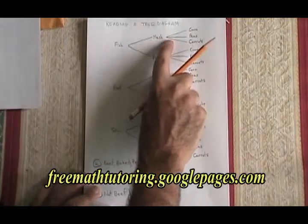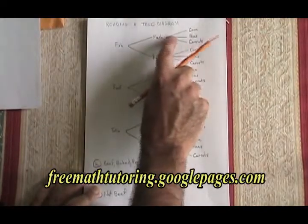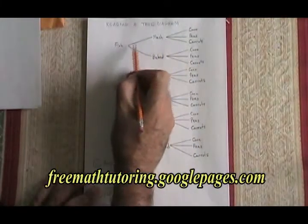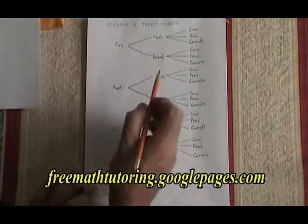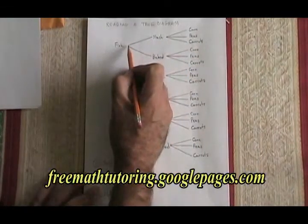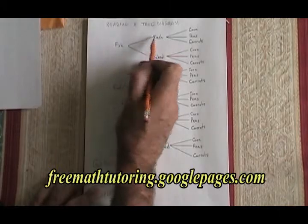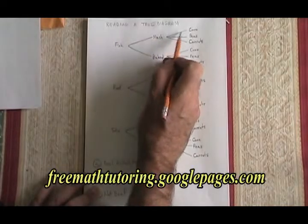From the potatoes, we have branches that go to the different types of vegetable. Every combination that a student can choose with their lunch is represented by a pair of branches. For instance, the top pair of branches goes from fish to mash and then to corn — that student has fish with mashed potatoes and corn.